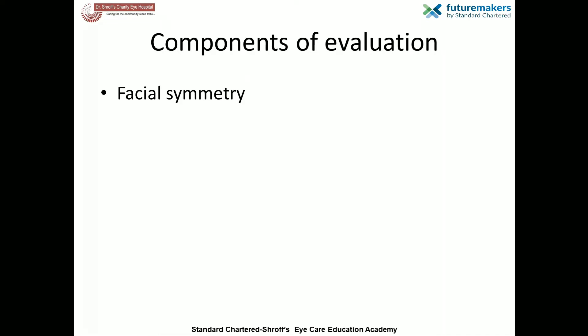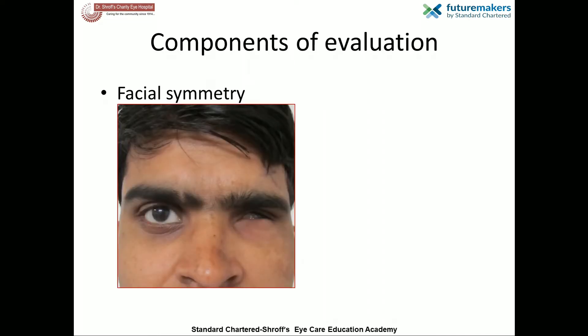Facial symmetry is looked for first. Any insult in childhood, as in this gentleman, can lead to retarded growth of the bony orbit and adjacent soft tissue. Lower eyebrows with flattening of the facial features on the ipsilateral side with smaller palpebral fissures are indicators of bony socket contracture.